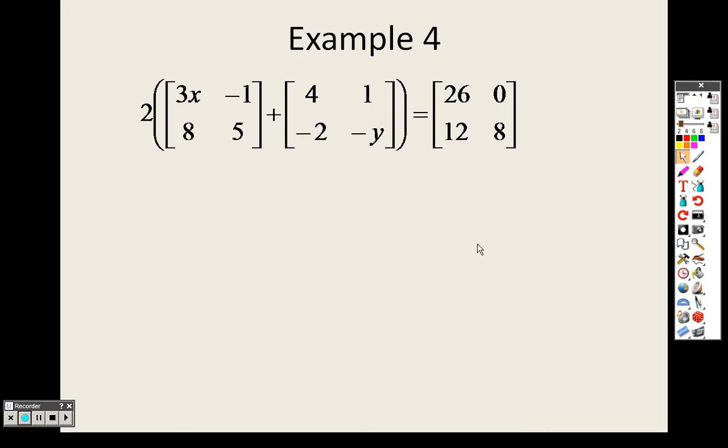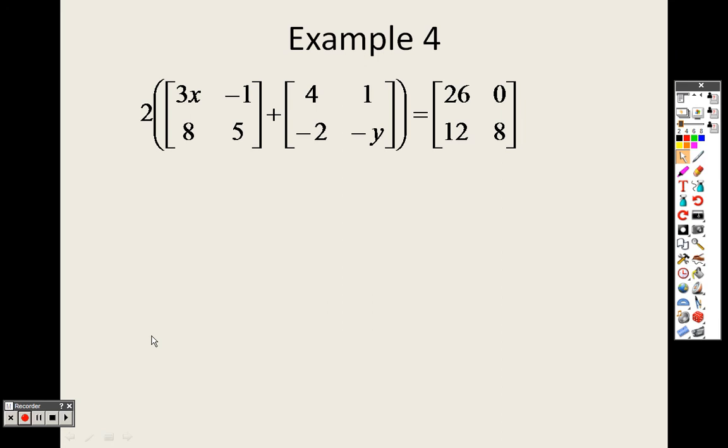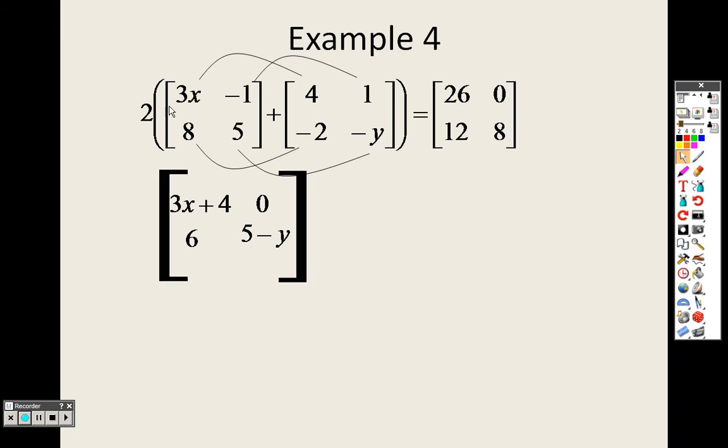So with something like this, what you need to do is according to order of operation. I need to combine these inside the parentheses first. So 3x plus 4. Here's the problem. It's 3x plus 4, right? I can't really put a 3x and a 4 together, so I write it as 3x plus 4. I have a negative 1 and a 1, when I add those together I get 0. I have an 8 and a negative 2, that's 6. I have 5 and a negative y. There's nothing I can do besides put them together and get 5 negative y.